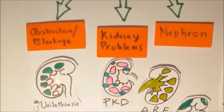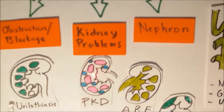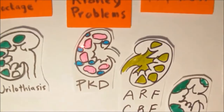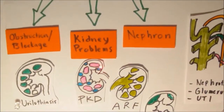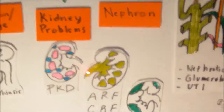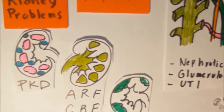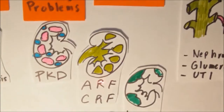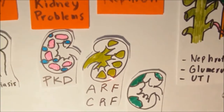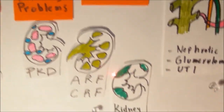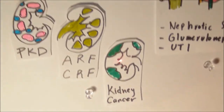The second category involves problems within the kidney itself. This includes genetic diseases, such as PKD, or polycystic kidney disease, or the destruction or loss of kidney function over time, such as in CRF, or chronic renal failure, acute renal failure, or ARF, and renal cell carcinoma.